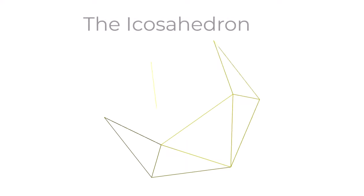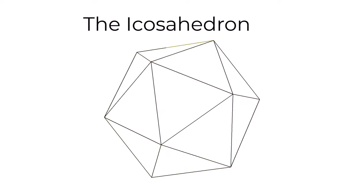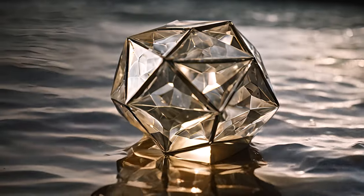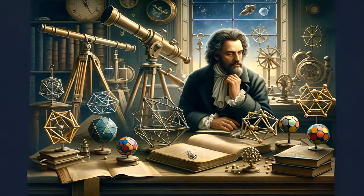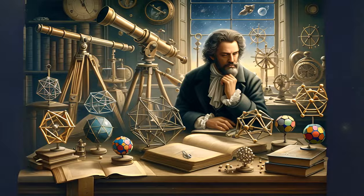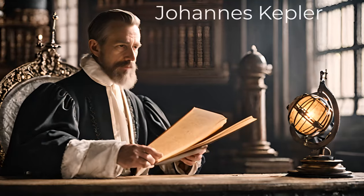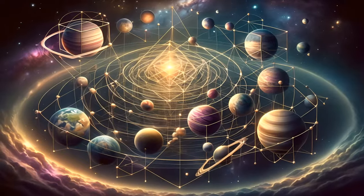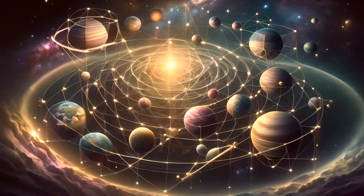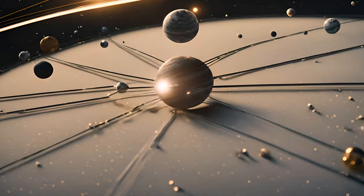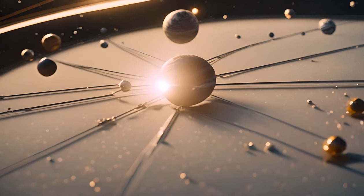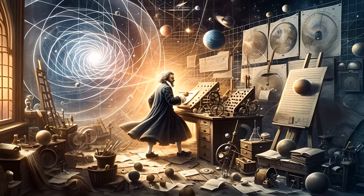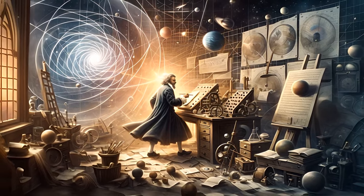The icosahedron, embodying water's fluidity and flow with its 20 triangular faces, completes the array of Platonic solids in Plato's vision. Fast forward to the 17th century, where we meet Johannes Kepler, founder of modern astronomy. Kepler initially imagined that the solar system was a nested sequence of Platonic solids, with planets orbiting along paths dictated by these shapes. Yet Kepler would go on to abandon this Platonic geometry, making astonishing discoveries about planetary motion.